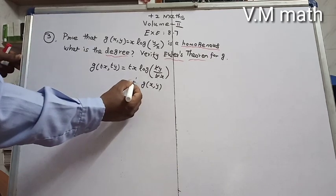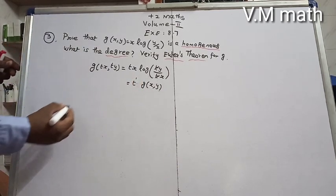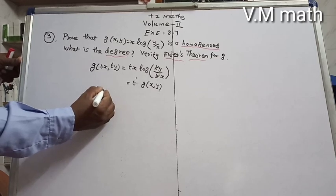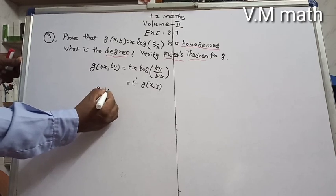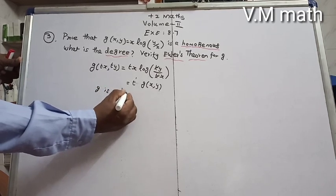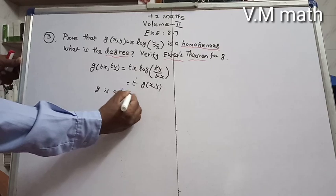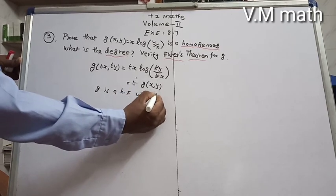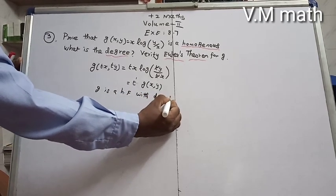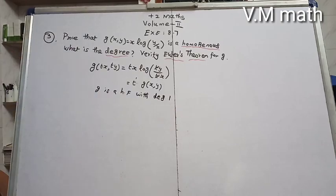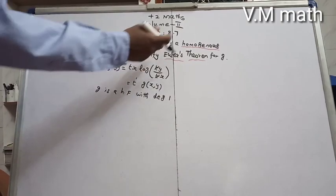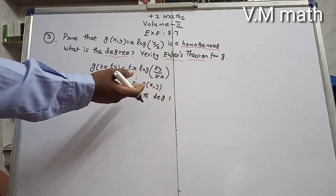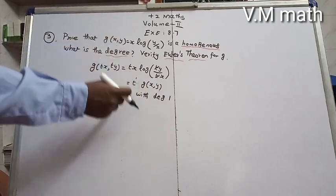Since g(tx, ty) = t¹·g(x, y), g is a homogeneous function with degree 1. We will now prove the degree is 1 using Euler's theorem.